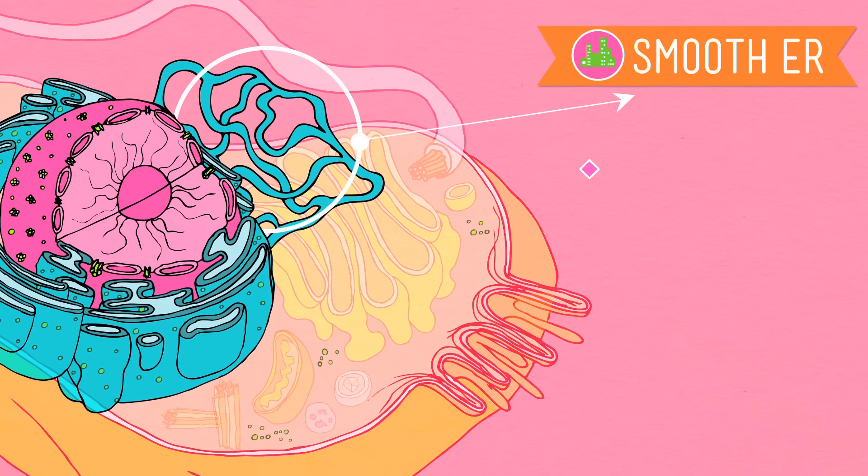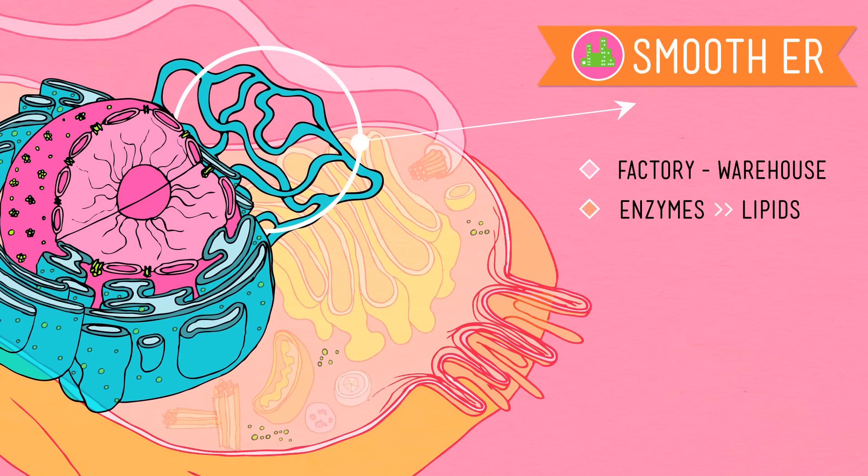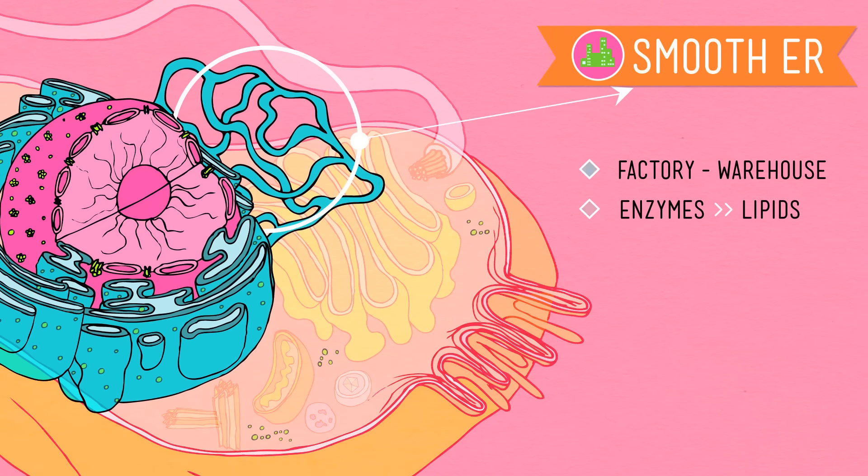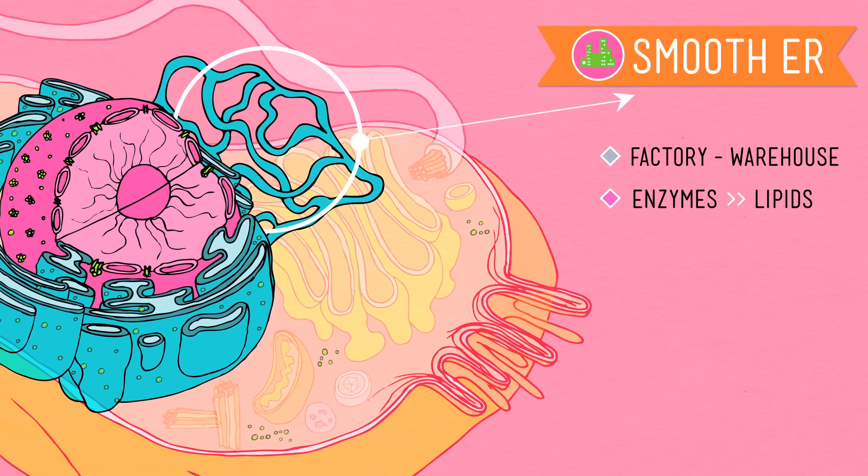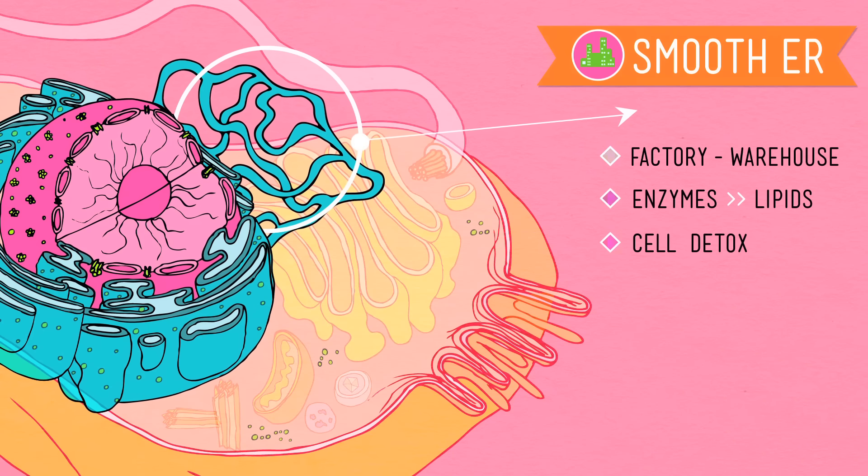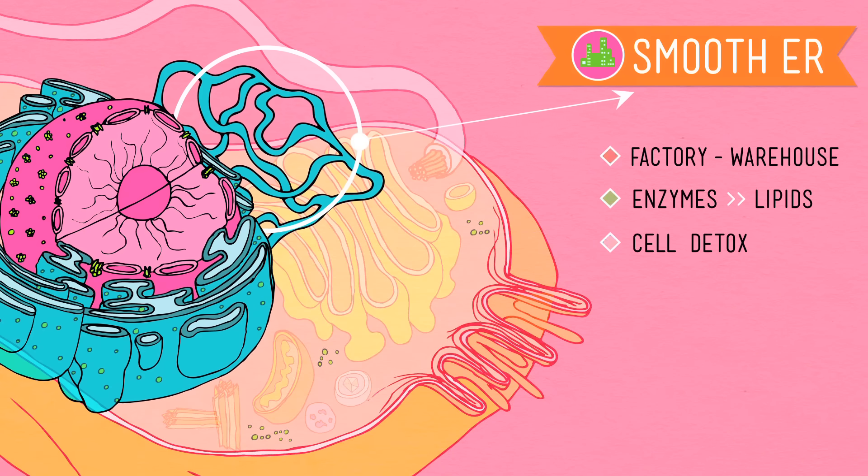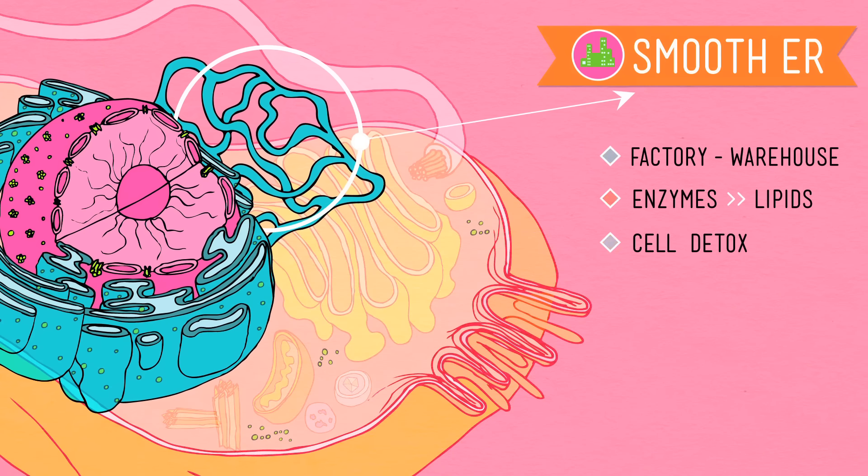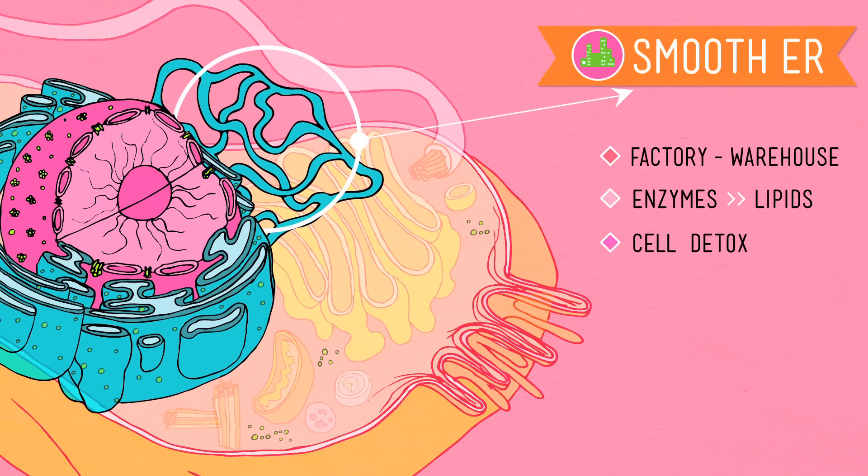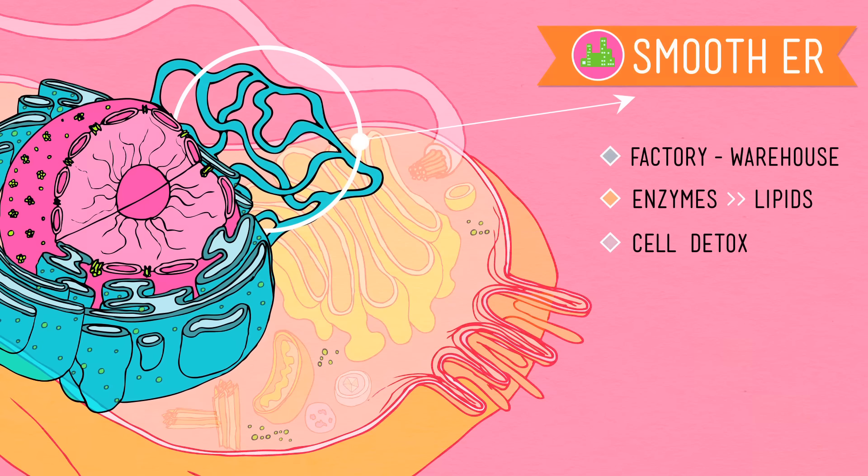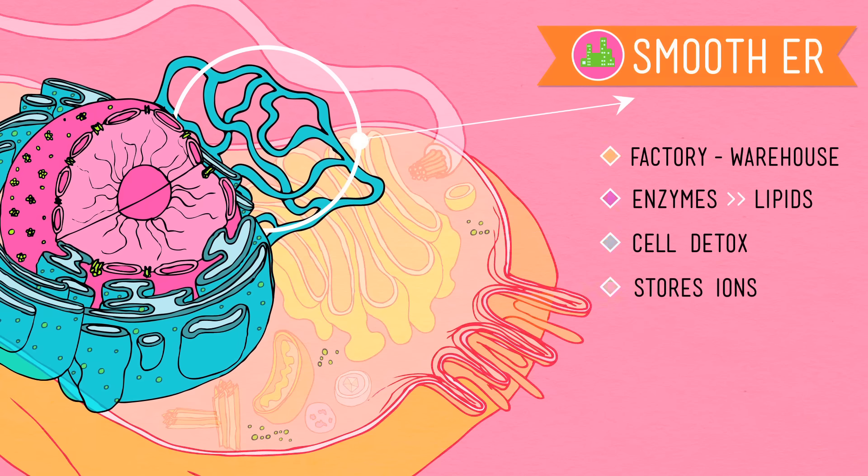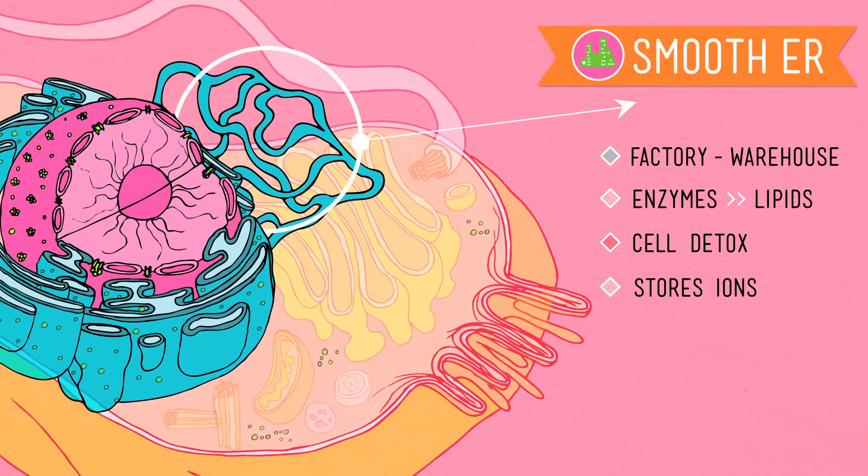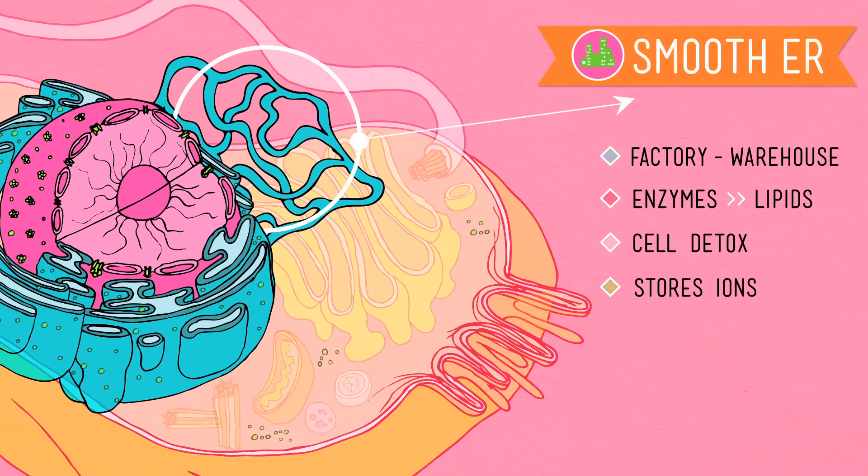Smooth ER acts as a kind of factory warehouse in the cell city. It contains enzymes that help with the creation of important lipids, which you'll recall from our talk about biological molecules, phospholipids and steroids that turn out to be sex hormones. Other enzymes in the smooth ER specialize in detoxifying substances, like noxious stuff derived from drugs and alcohol, which they do by adding a carboxyl group to them, making them soluble in water. Finally, the smooth ER also stores ions in solutions that the cell may need later on, especially sodium ions, which are used for energy in muscle cells.